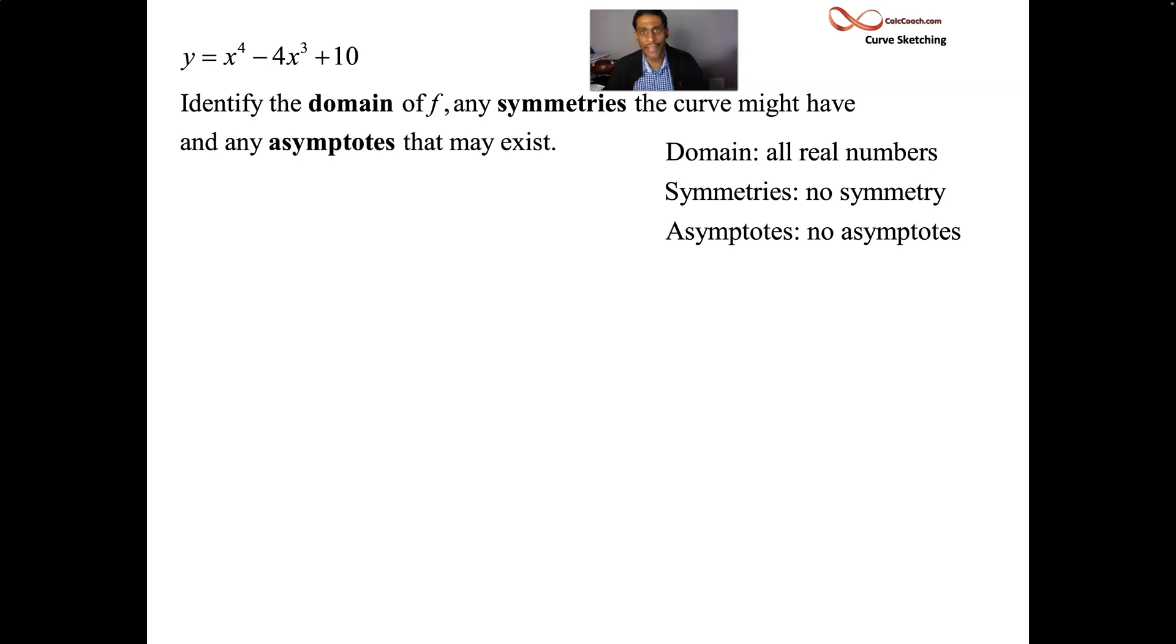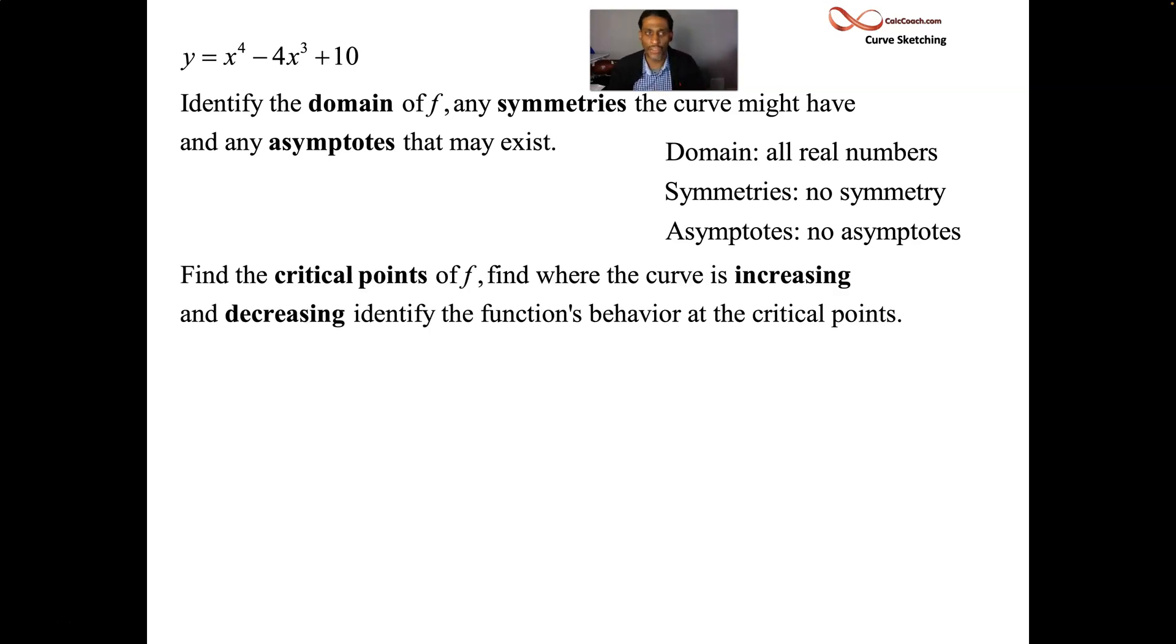How about asymptotes? Well, polynomials don't necessarily have asymptotes. What we'll be looking for would be a denominator to look for vertical asymptotes, a limit at infinity that's a constant to look at horizontal asymptotes, and we'll be looking then to divide a denominator into a numerator to get the slant asymptotes. No asymptotes, no symmetry. The domain is all real numbers.